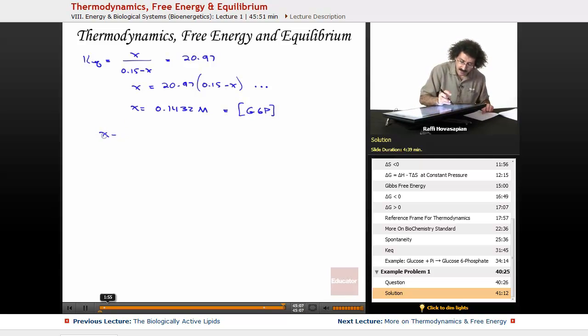That's going to equal the equilibrium concentration of the glucose 6-phosphate. The equilibrium concentration of the glucose 1-phosphate, if you go back, it's 0.15 minus X. So when we do that, we get 0.0068 molar equals the concentration of the glucose 1-phosphate.